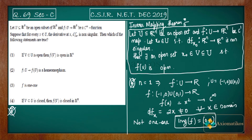The third option is the same kind of claim and is also incorrect because we already proved f is not one-to-one. Now let's look at the fourth option, which says: if V ⊂ U is closed, then f(V) is closed. The domain U itself is a closed set — a space is always closed in itself, and also open.